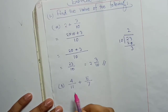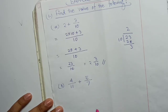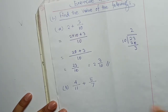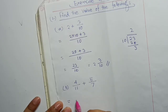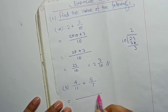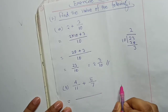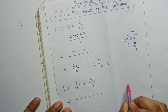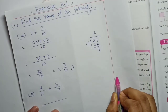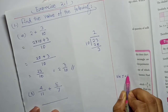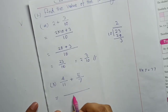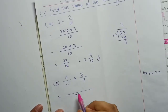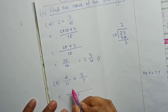Next problem: 4 by 11 plus 5 by 7. We need the LCM of 11 and 7. Both 11 and 7 are prime numbers, so we do the multiplication. LCM of 11 and 7 is 77.